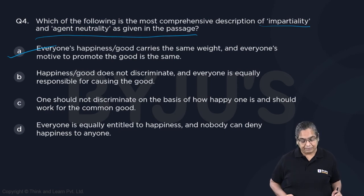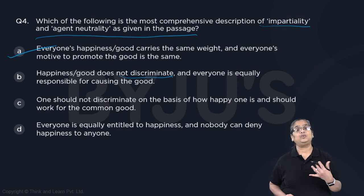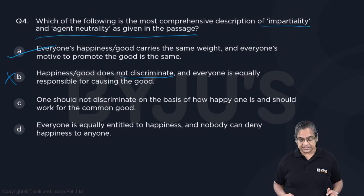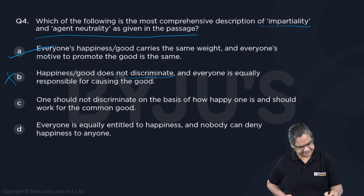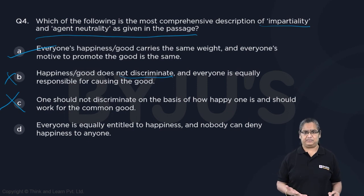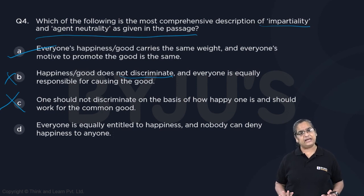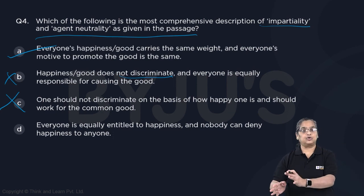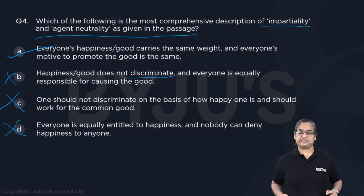We should still look at the other options. Option B says happiness does not discriminate — but that misrepresents the meaning of agent neutrality and impartiality. Option C says one should not discriminate on the basis of how happy one is and should work on the basis of the common good — but it doesn't address the basis of discrimination correctly. Option D says everyone is equally entitled to happiness and nobody can deny happiness to anyone — while that is partially correct, it misses that everyone's happiness has the same value and the concept of good is impartial. Therefore, option A is the correct answer.